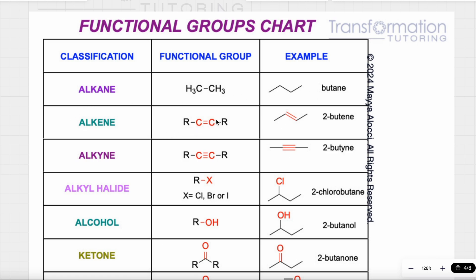Another functional group is a C double bond C. If we have a double bond between two carbons, this is called an alkene. My molecule has R groups, which just represent the rest of the molecule. In this session, functional groups are highlighted in red so you can identify them easily. So here, the functional group is C double bond C — that's an alkene. An example is 2-butene, where I have a double bond on the second carbon.